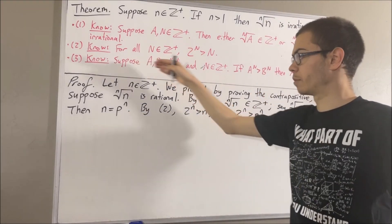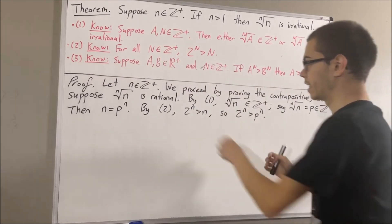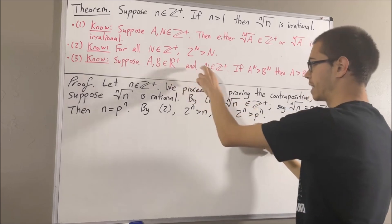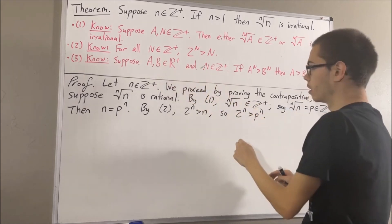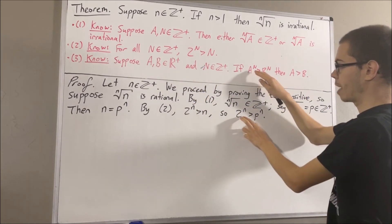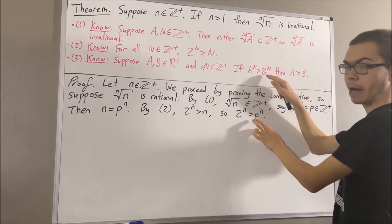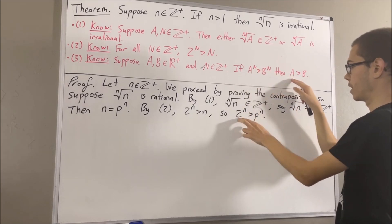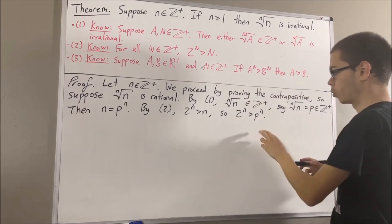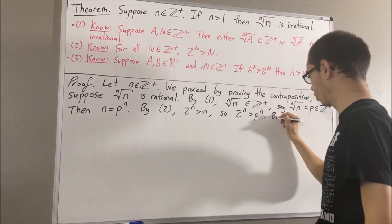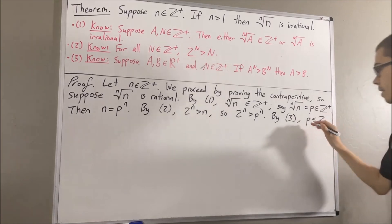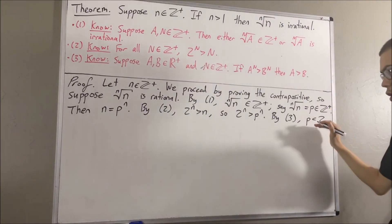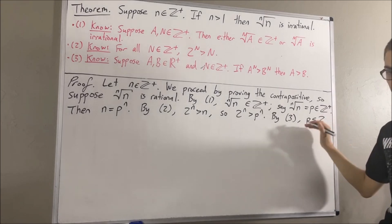And now we can apply fact number three. We're taking A to be 2, B to be p, and N to be n. We see that A to the power of N is greater than B to the power of N. Therefore, A is greater than B. In other words, p is less than 2.